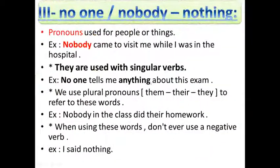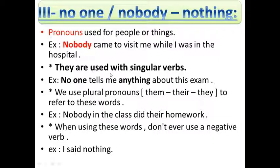The third group: no one, nobody, nothing — pronouns used for people or things. Nobody came to visit me while I was in the hospital. They are also used with singular verbs. For example: No one tells me anything about this exam. We use plural pronouns — them, their, they — to refer to these words.